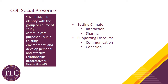The definition of social presence, according to Garrison 2011, is the ability to identify with the group or course of study, communicate purposefully in a trusting environment, and develop personal and effective relationships progressively. Examples of indicators for social presence include effective expression like humor and emoticons, open communication such as complementing and agreeing, and group cohesion, which is facilitated by using names and correct pronouns and mentioning the learning goal in the context of individual contribution. Keep in mind that all of these are just examples.